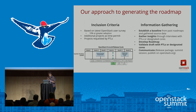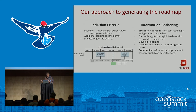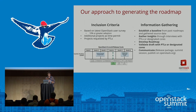We put that all together, develop the roadmap, and then go back to the PTLs, cores, and key developers to get their review and check off to make sure that the way we've captured and classified the information matches how they view the roadmap and the progress for their project. Then we work with the OpenStack Foundation to publish it. You can find it on openstack.org/software/roadmap, and we'll publish it there every quarter on an ongoing basis.